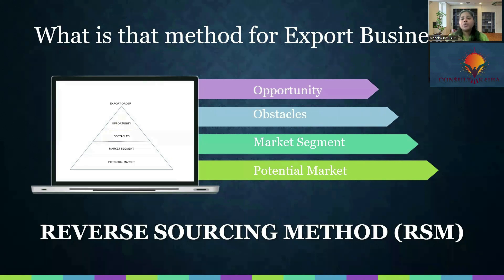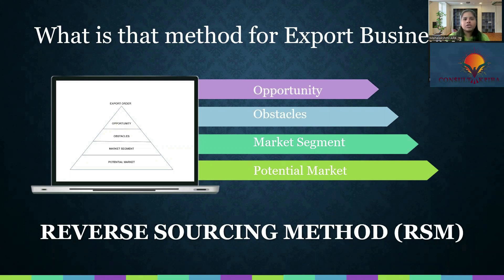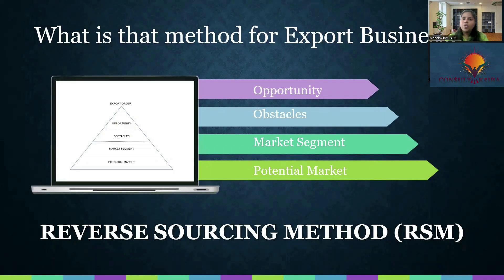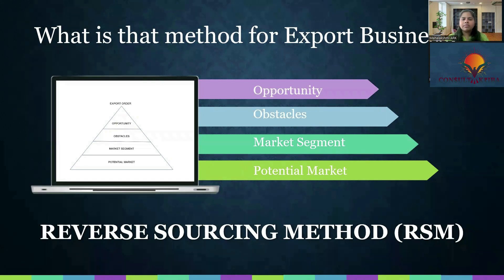The tools we use in the reverse sourcing method are trade statistics tools, because you have to know the export trend. If the export is growing on average both in quantity and value — for example, Bangladesh is buying 100 million tons of yarn. In year 2019, and in 2020, if they are buying 120 million tons of yarn, then the quantity grew. But in the third year, instead of buying 120 million tons, the country's total import is 110 million tons. The major economic driver for Bangladesh is the garment industry.